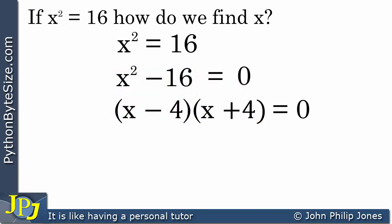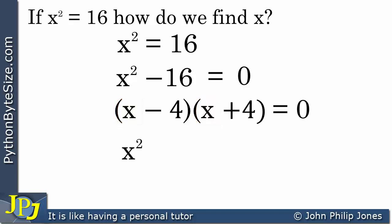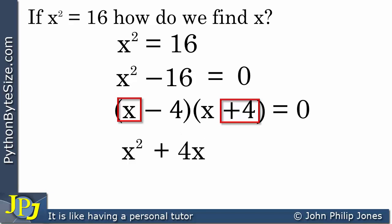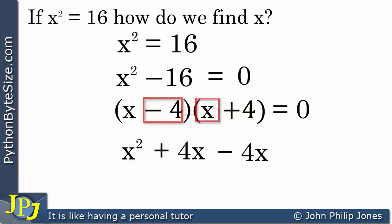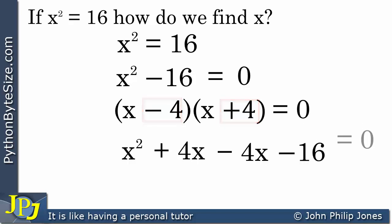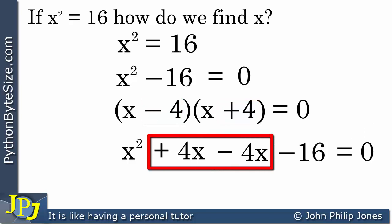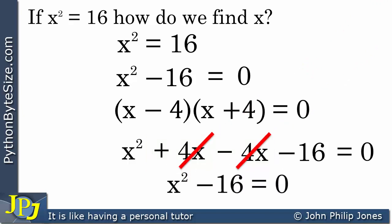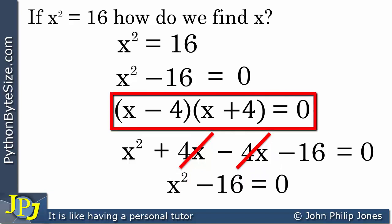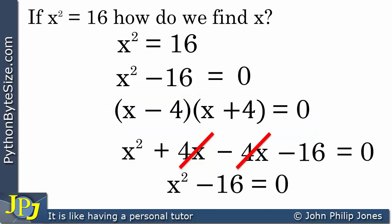Let's verify the factorization by expanding. First, x times x gives x squared. Then x times plus 4 gives plus 4x. The minus 4 times x gives minus 4x. And minus 4 times plus 4 gives minus 16. This lot equals 0. The plus 4x and minus 4x cancel out, leaving x squared minus 16 equals 0 — confirming the factorization was correct.